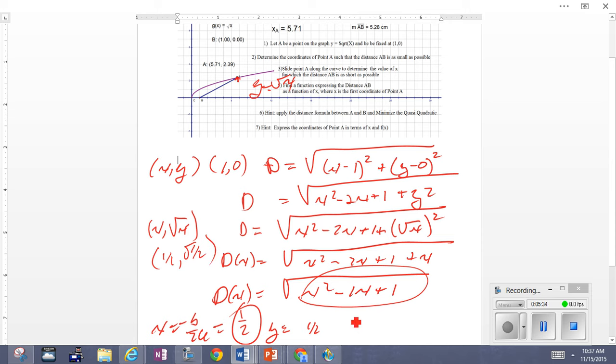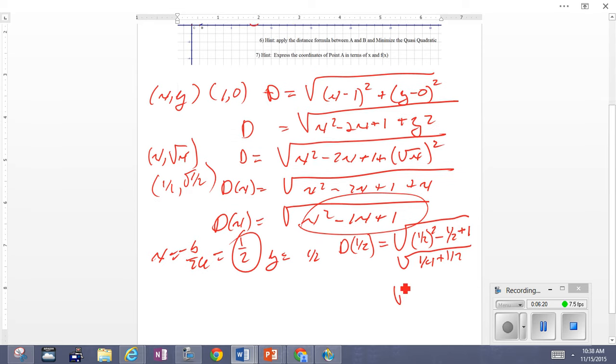The D(1/2) is the minimal distance. The function at 1/2 is (1/2)² - 1/2 + 1, which is 1/4 - 1/2 + 1. This is 1/4 + 1/2, which equals 3/4. So the minimum distance is going to be √(3/4), which is √3/2.